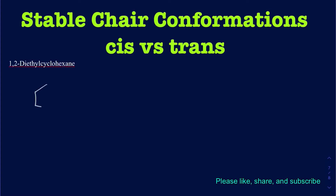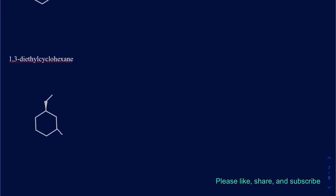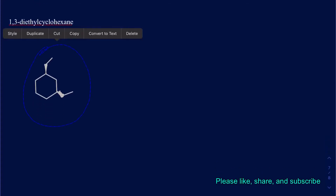So let me go ahead and draw the conformations. I've got this 1,2-diethylcyclohexane and I want to draw one of them to be cis — suppose both of those are coming out of the page. In the trans case you'll have one going back into the page. I'll also be looking at 1,3-diethylcyclohexane with one coming out and one going back into the page.